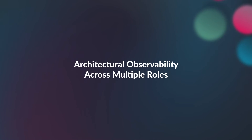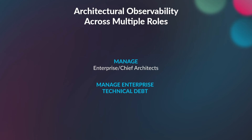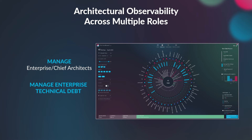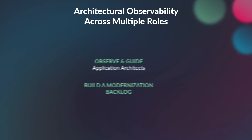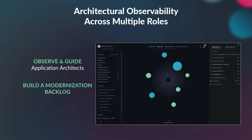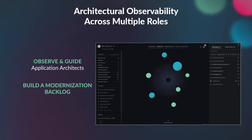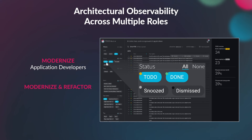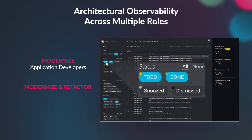Architectural observability is critical across multiple roles. Enterprise and chief architects can manage their enterprise technical debt with a dashboard that tracks the architectural posture of their entire application estate to determine whether it is trending up or down, as well as identify specific apps for modernization with an actual data-driven business case. Application architects observe their architectures to identify sources of tech debt and architectural drift, and then guide their development teams by creating a modernization backlog of remediation tasks. Application developers execute their architectural to-do list and use vFunction's automation to continuously modernize the application, leveraging vFunction's refactoring engine as required to transform selective domains into microservices.